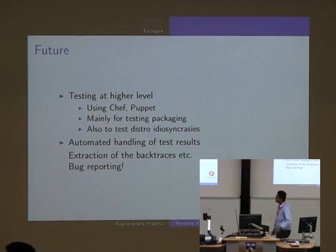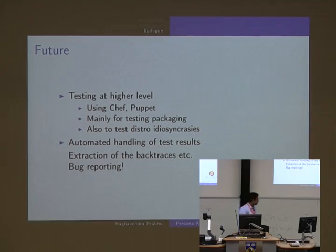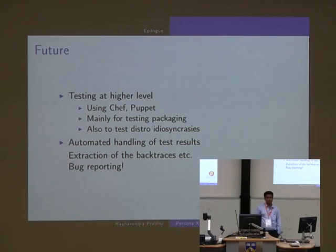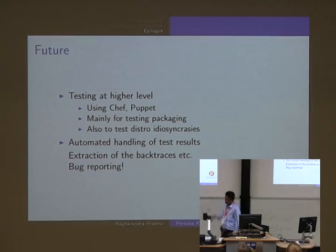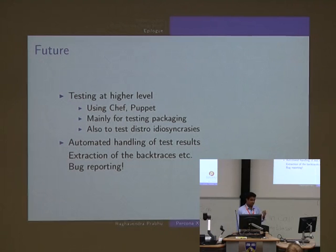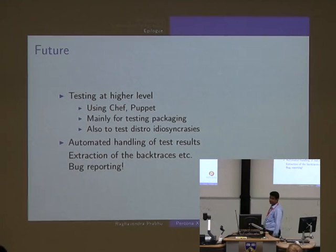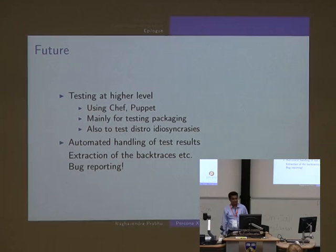For the future, we want to test at a higher level with Chef and Puppet. It helps in testing packaging and also helps to destroy idiosyncrasies - especially with Debian, which has exhibited certain idiosyncrasies for which we had to do many fixes. And automated handling of test results - a colleague is already working on this. We run a very large number of tests, and analyzing each one when they've failed can be tedious. Some kind of automated extraction of backtraces and automated bug reporting to Launchpad would be very helpful.